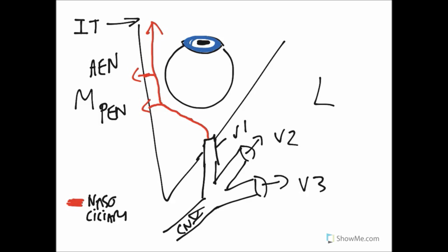Going back to the origin of the nasociliary nerve, it gives off something known as the ciliary ganglion — I'll draw that as a small ball here in red. I'll also draw on the optic nerve going through the optic canal. The ciliary ganglion hangs off the nasociliary nerve right at the beginning where it branches from V1.